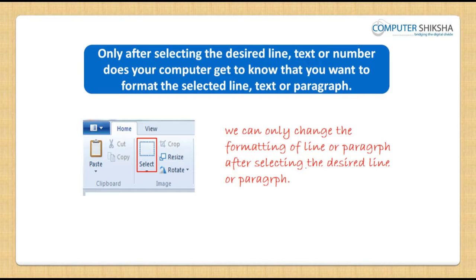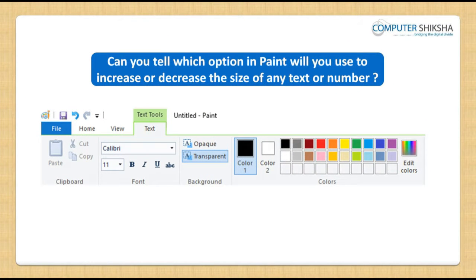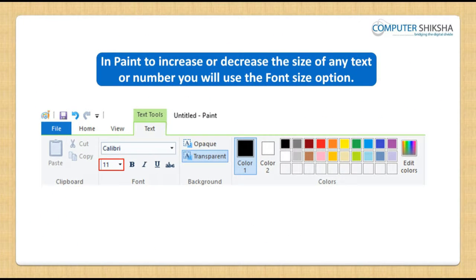Only after selecting the desired line, text or number does your computer get to know that you want to format the selected line, text or paragraph. Can you tell which option in paint you will use to increase or decrease the size of any text or number? In paint, to increase or decrease the size of any text or number, you will use the font size option.